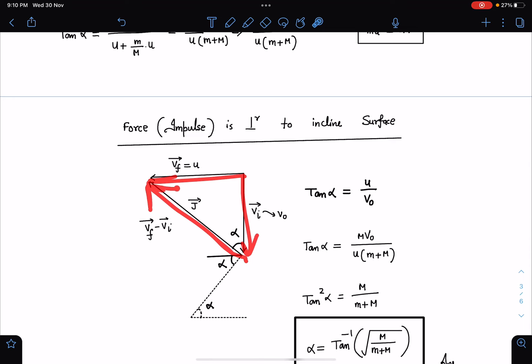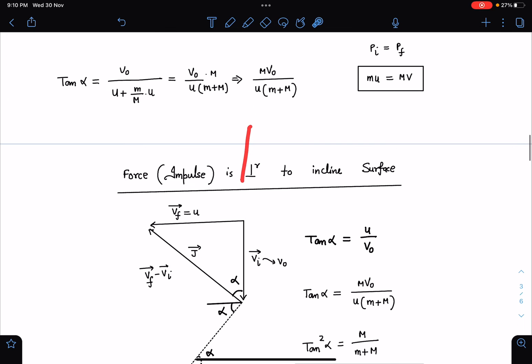This angle is alpha, this is alpha, this is alpha. I can say tan alpha is directly U by V₀. And tan alpha here we have calculated as MV₀ divided by U(m + M).